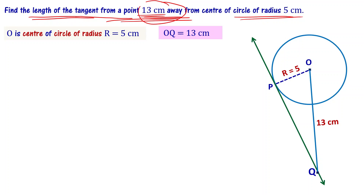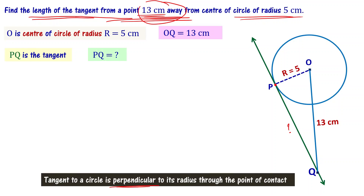We draw a tangent from Q to the circle, which we call PQ, and we want to find its length. A tangent to a circle is perpendicular to its radius through the point of contact. The radius OP drawn to the point of contact P is perpendicular to the tangent PQ, so angle P equals 90 degrees. Therefore triangle OPQ is a right angle triangle.